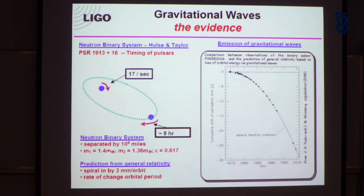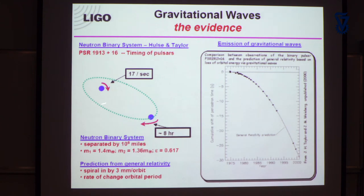That variation was interpreted as an orbit: there was another invisible star that nobody could see optically. It was two pulsars orbiting each other. When the visible pulsar moved toward you it appeared to pulse a little faster; when moving away, a little slower. That had an eight-hour period, and that system was enough.